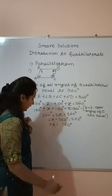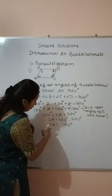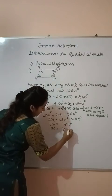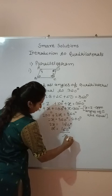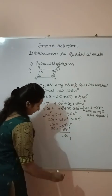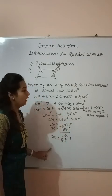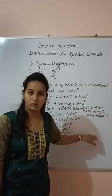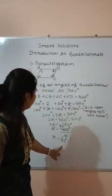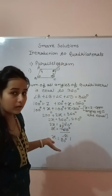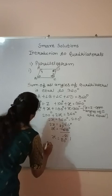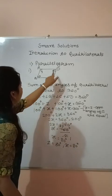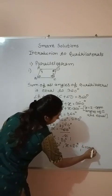So now we find the value of X: 2X equals 160 degrees, so X equals 160 divided by 2, which equals 80 degrees. And since X is equal to Z — because opposite angles of the parallelogram are equal — Z is also 80 degrees. And angle B is also 80 degrees. So the final values are: Z equals 80 degrees, X equals 80 degrees, and Y equals 100 degrees.